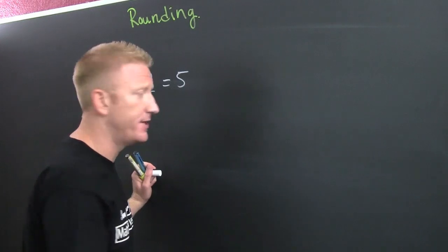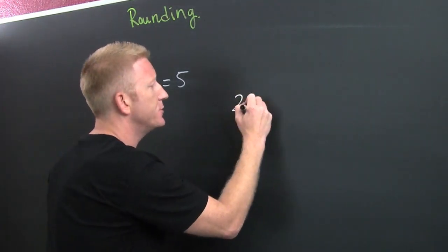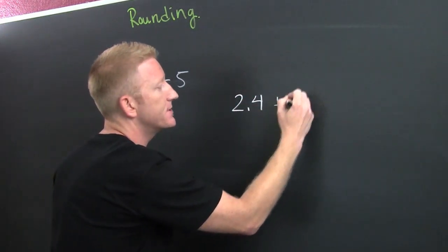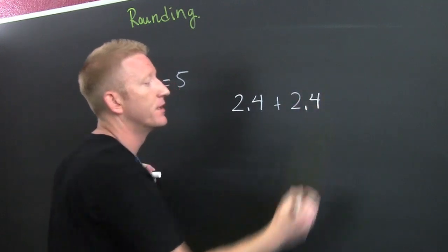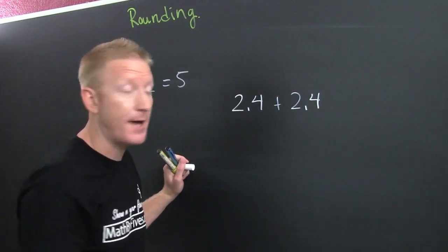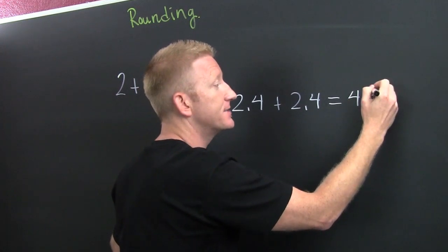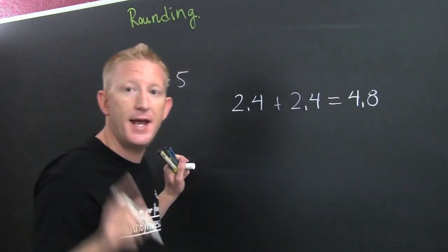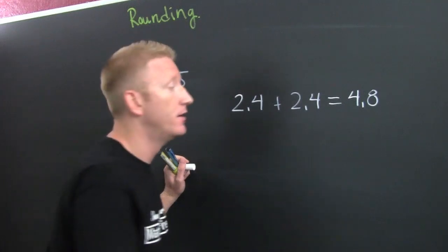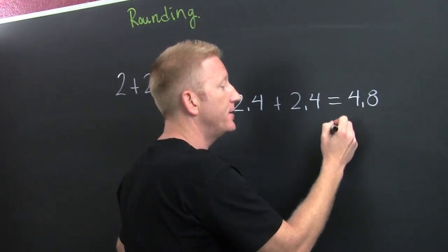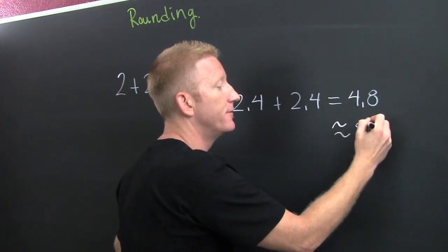And an example of this is something like this. 2.4 plus 2.4. What should that be? That is 4.8. Great. And if you were going to round 4.8, what would you get? You would get about 5.